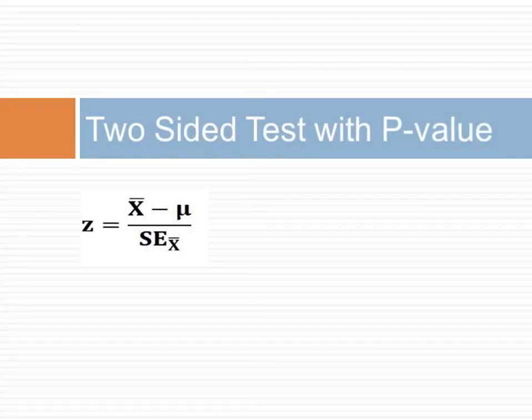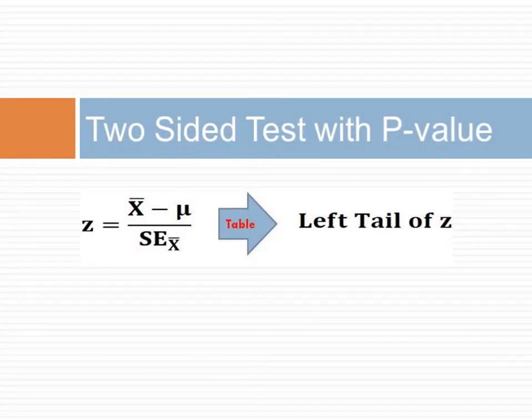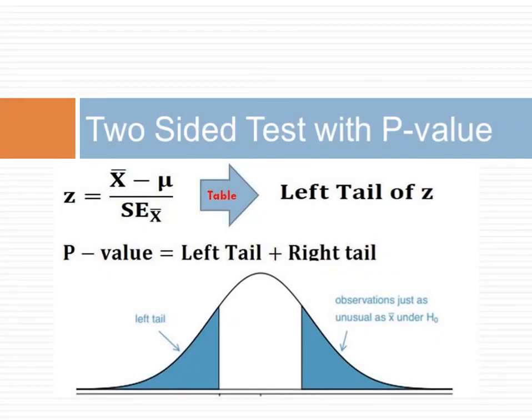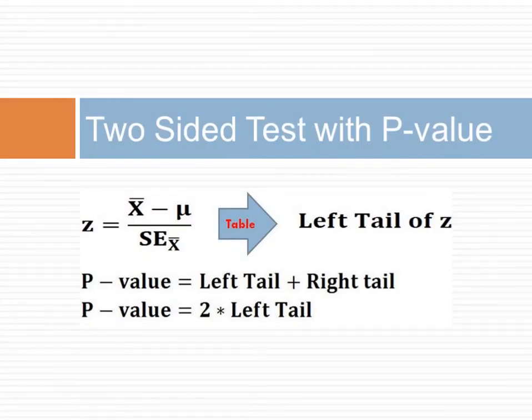When conducting a two-sided test of a null hypothesis, we calculate the z-value as before. We look up the area under the left tail of the z-value in a standard normal distribution. To calculate the p-value, we need to consider both the right and left tails. Since the normal distribution is symmetric, this is calculated as twice the value of the left tail.